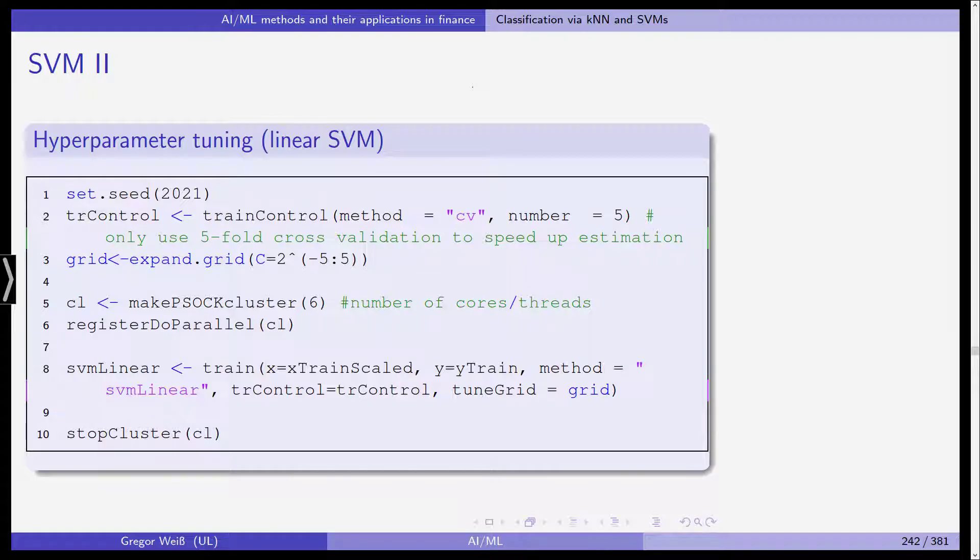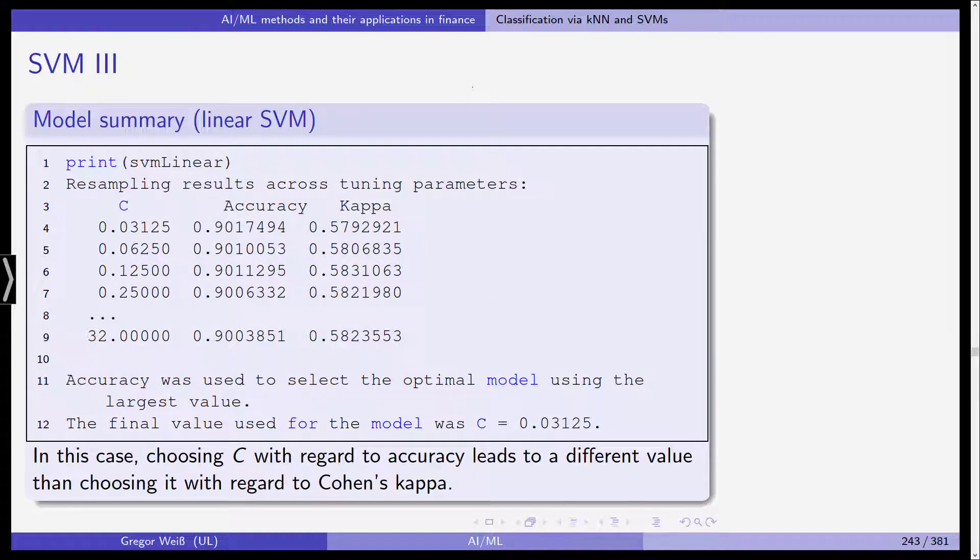Then SVM linear is our object and we train the support vector machine using X train scale, the scaled data, Y train for the response. And as a method, we set SVM linear and then this is the result and we stop cluster. We print out the results and you can see the resampling results across the tuning parameters with different parameters for C and then accuracy and kappa. We've seen that in the last video and the accuracy was used to select the optimal model and it was optimal for a hyperparameter C equal to 0.03125.